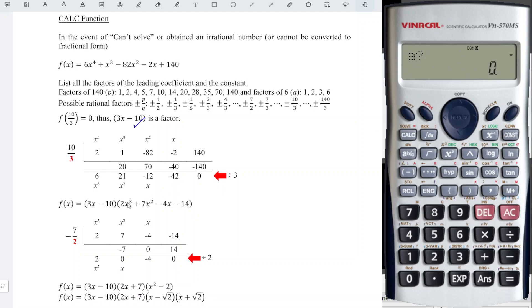A is the coefficient of x^3, which is 2. B is the coefficient of x^2, which is 7. C is the coefficient of x, which is -4. And D is the constant, which is -14. We press equal, and we will obtain all the factors.